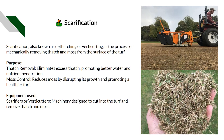Scarification — also known as dethatching or verti-cutting — is the process of mechanically removing thatch or moss from the surface of the turf. This doesn't have to be done with a machine; it can also be done with rakes or brushes. The purpose is to eliminate thatch and promote better water and nutrient penetration into the soil, and for moss control we can disturb the moss and its growth habits, promoting a healthier sports turf.